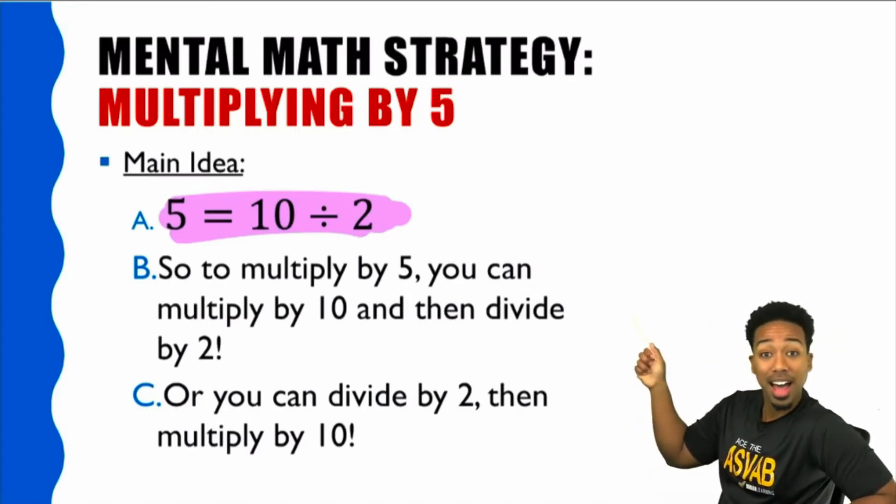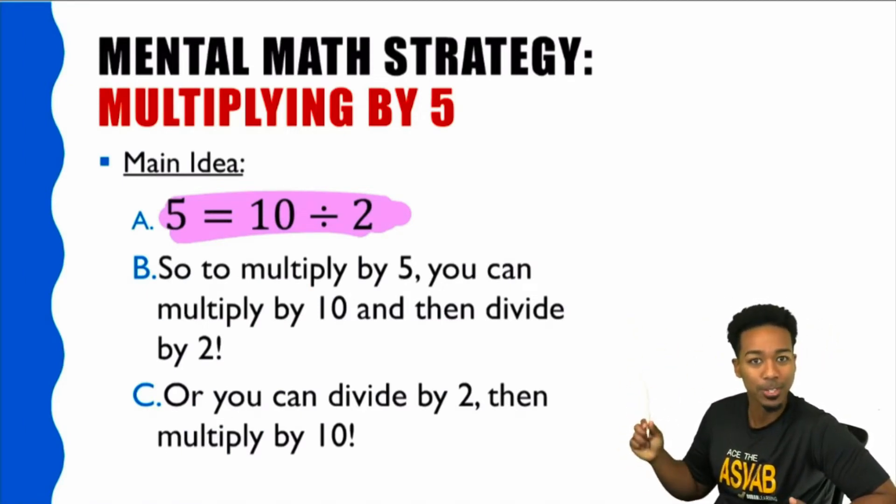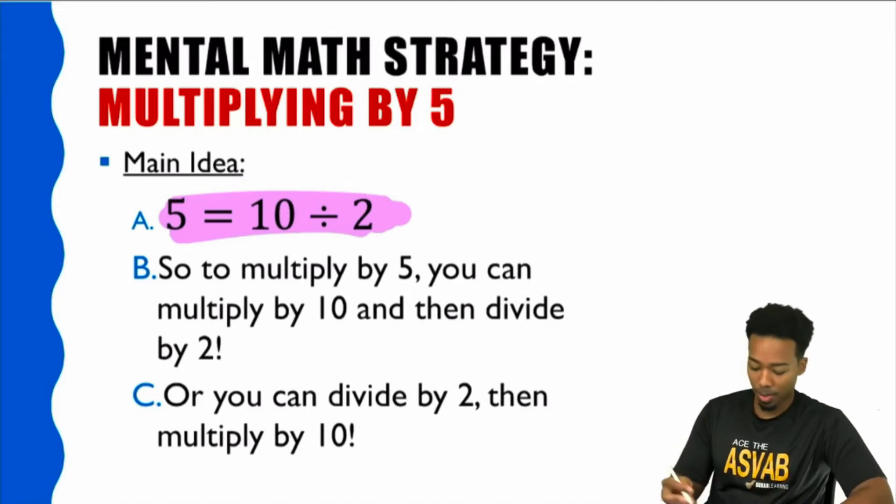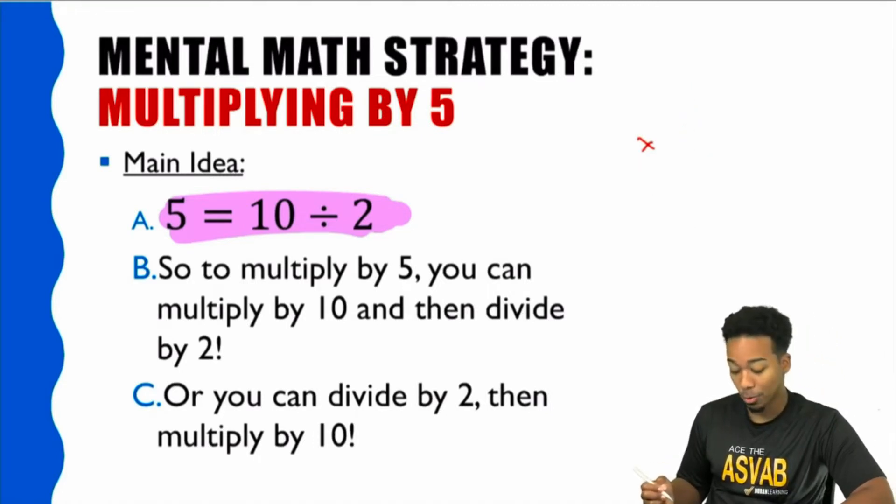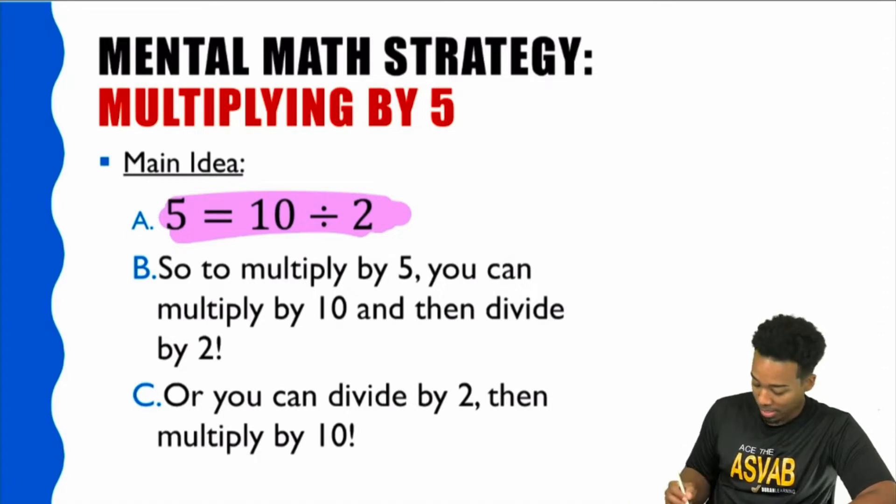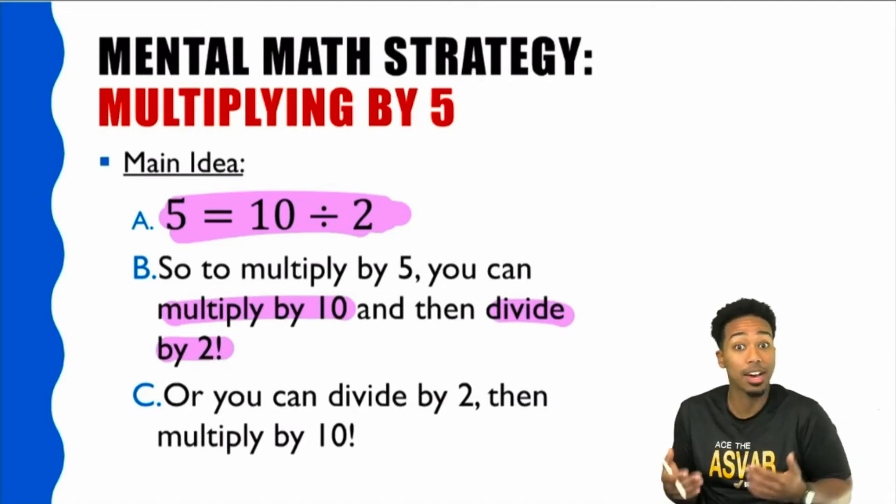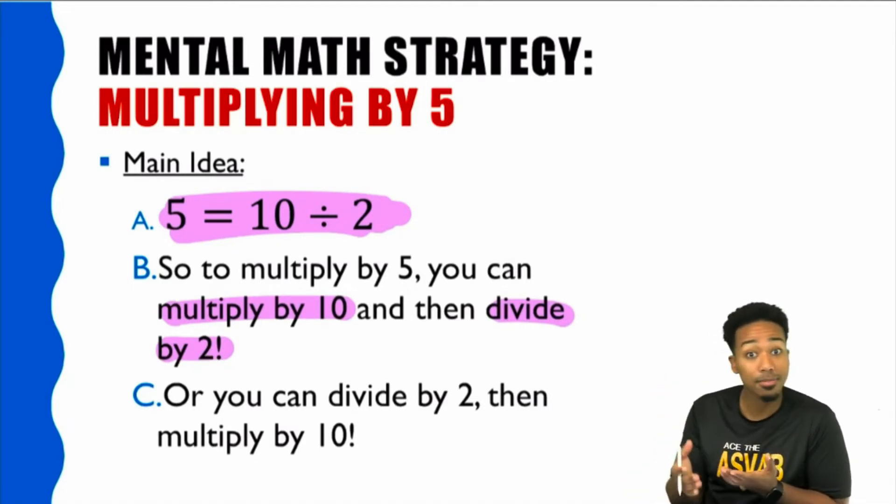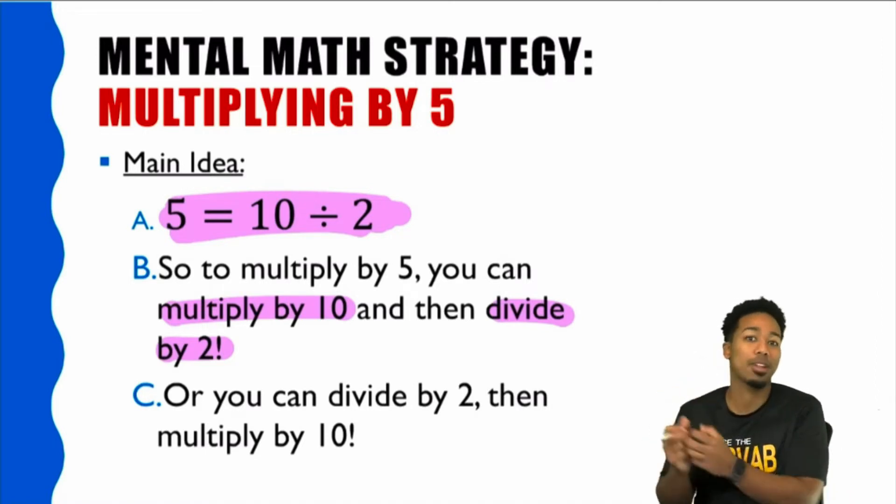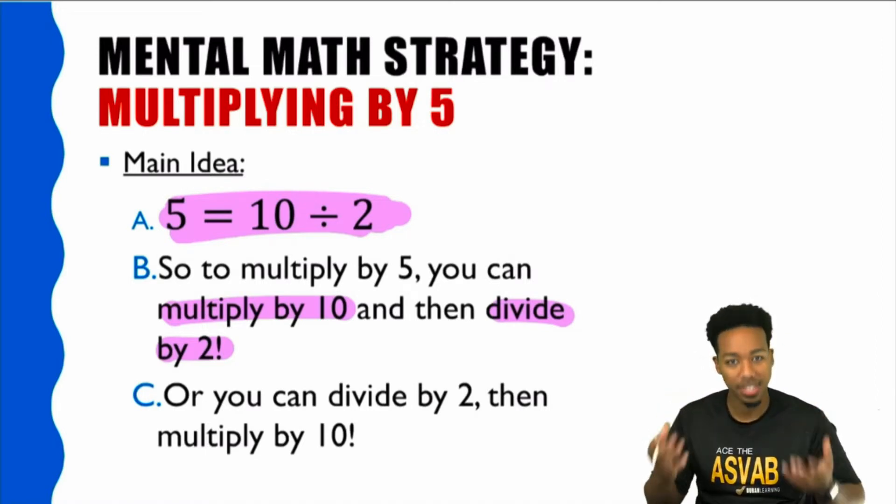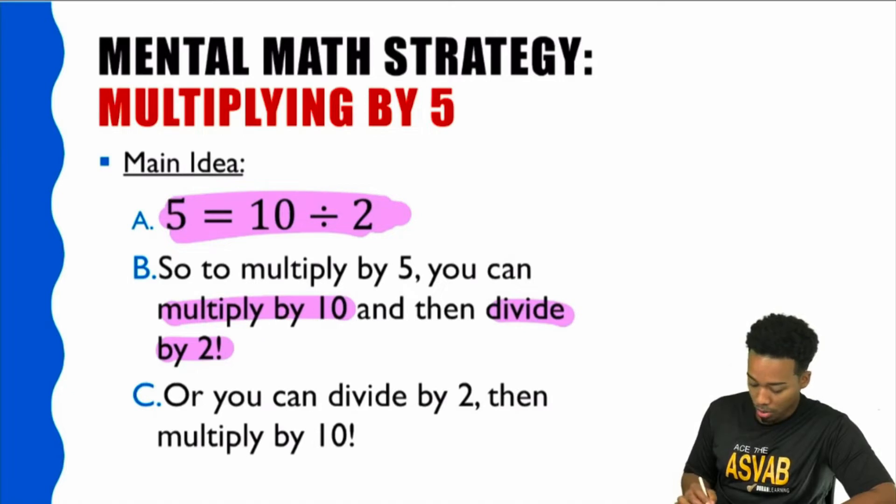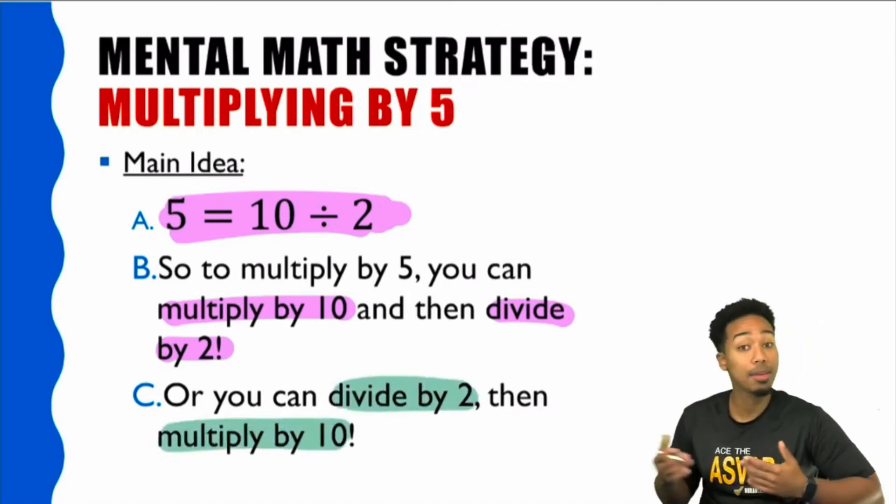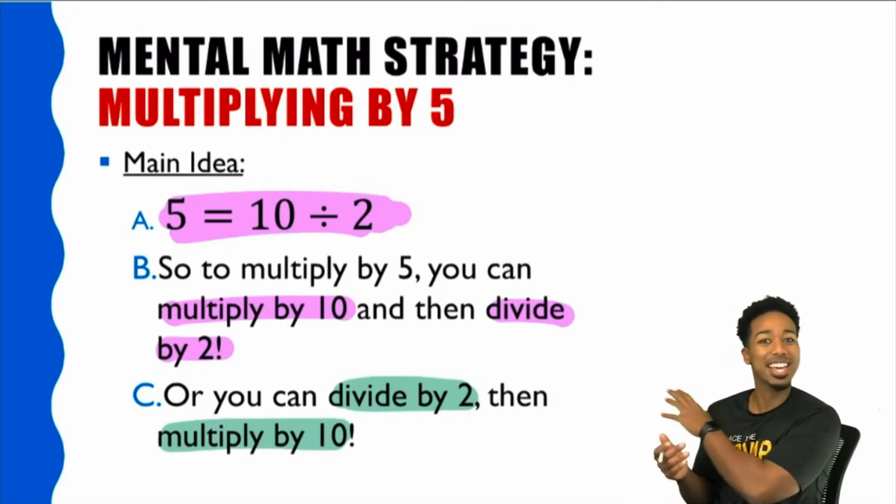And so watch this. Because 5 is the same thing as 10 divided by 2, here's what you can do. Instead of trying to multiply by 5 and doing all that mumbo jumbo. Instead of doing all of that, you can just multiply by 10 and then divide by 2. Because again, 5 is 10 divided by 2. So you can just multiply by 10 and then divide by 2 because that will be the same as multiplying by 5. Because 5 is half of 10. Another way that you can do it, and yes, this works, you can switch the order. You can also go and divide by 2 and then multiply by 10. That still works. We're going to show you some examples we're going to practice right now.